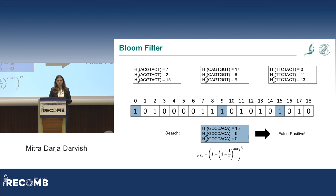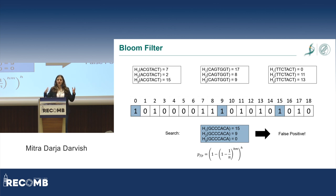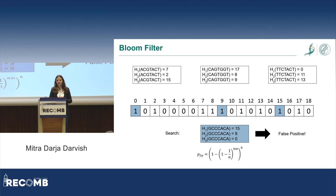The false positive rate can be estimated by a formula based on the length of your bit vector, the number of elements you insert, and the number of hash functions. It's rather easy to account for, but it's obviously a downside.